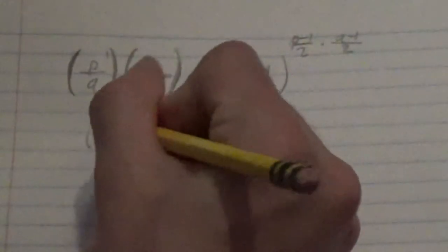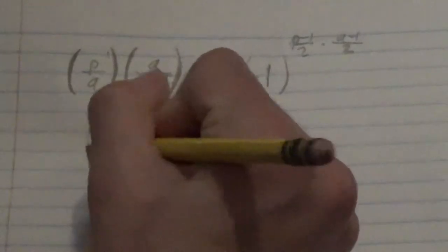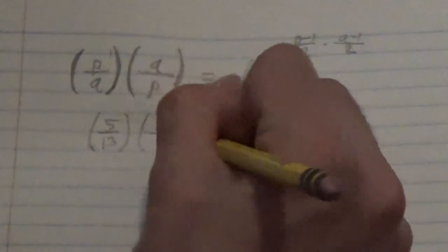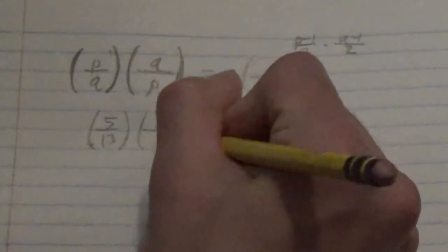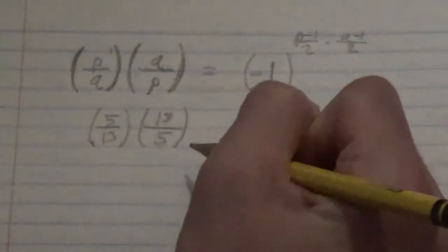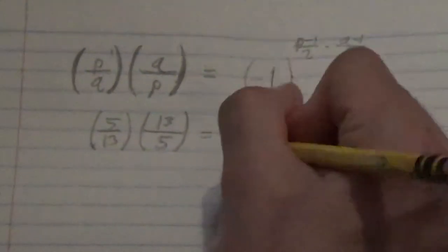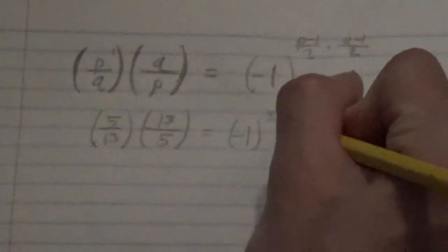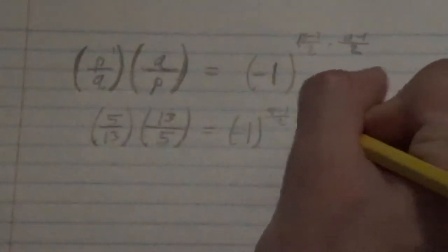So we know 5 over 13, whether it's a quadratic residue, multiplied by 13, whether that's a quadratic residue over 5, is equal to, and let's just substitute from here, so it's the quantity negative 1, and it's to the power, well let's see, p is 5, 5 minus 1 over 2 times 13 minus 1 over 2, and of course we can simplify that.